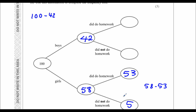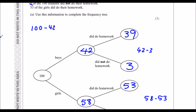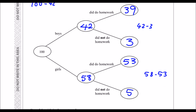If eight in total didn't do the homework, that means three of the boys didn't do their homework. How many boys are left? 42 take away 3 is 39, so 39 boys did the homework. So we can complete the tree - we've done it.